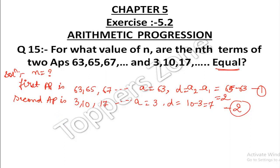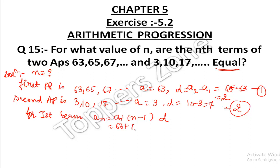In the given equation, both APs have equal nth terms. So, using the formula an = a + (n−1)×d for the first AP, we put values: 63 + (n−1)×2. Expanding gives 63 + 2n − 2, and 63 minus 2 is 61, so the nth term of the first AP is 61 + 2n.